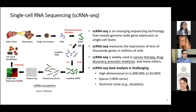After obtaining the data matrix, we can do downstream analysis — for example, cell clustering to identify different cell clusters. scRNA-seq data is now widely used in cancer therapy, drug discovery, precision medicine, and many other fields. However, there are many challenges in analyzing such datasets. For example, scRNA-seq data has very high dimensionality — a typical dataset can include more than 20,000 genes — and the data size is also very large, with over one million cells.